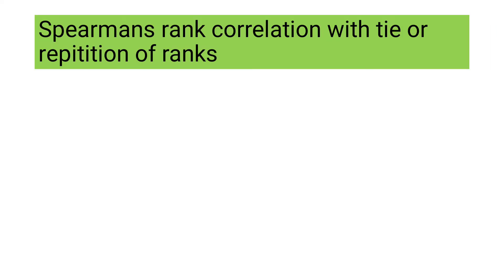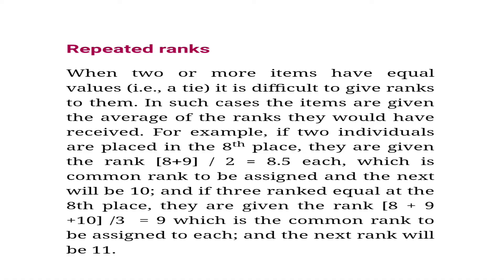Spearman's rank correlation with ties — when ranks are repeated or when marks are repeated, how do you rank them? When two or more items have equal values, that is a tie, it is difficult to give ranks to them. In such cases the items are given the average of the ranks they would have received. For example, think that two students have scored the same marks — how will you give ranking to them? That is what you will see in this video.